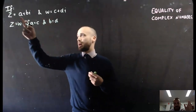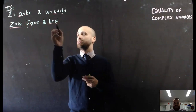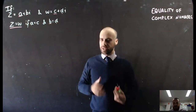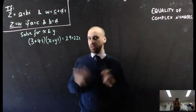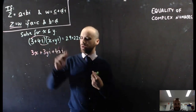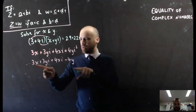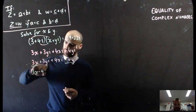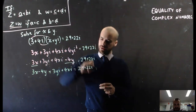Equality of complex numbers — the last topic in the recap. If z equals a plus bi and w equals c plus di, and those two complex numbers are equal, then a and c must be equal and b and d must be equal. We're going to use simultaneous equations to solve a question of equality. We're saying that (3 plus 4i)(x plus yi) equals 29 plus 2i.